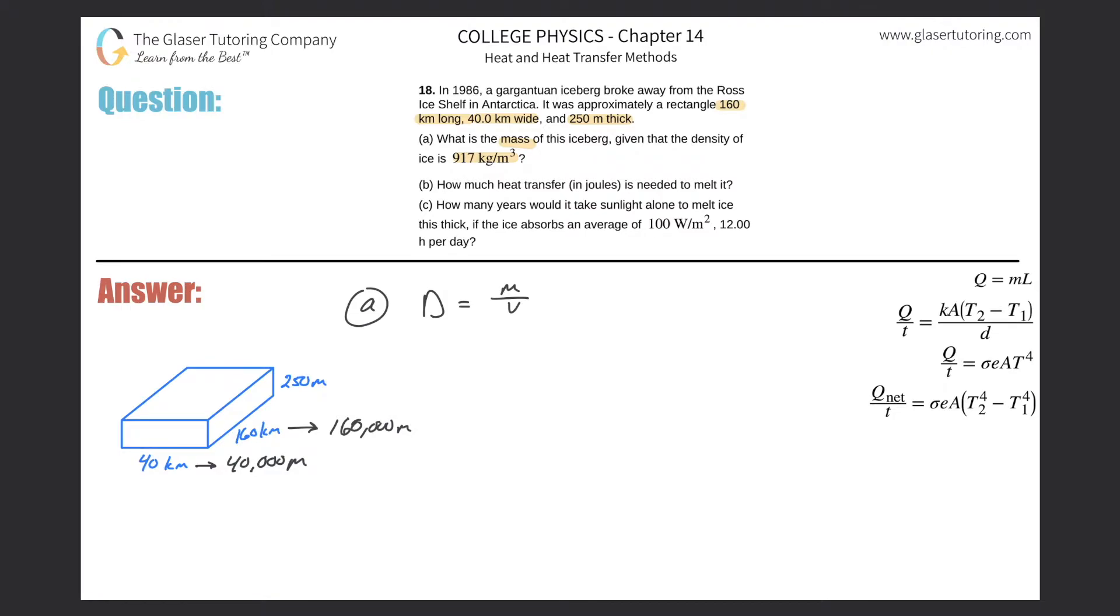Now we can calculate the volume - length times width times height. I know I can solve for the volume, I know they gave me the density, so now I can solve for the mass. Just simply cross multiply. So it's density times volume. The mass now will equal the density of 917 multiplied by the volume, which is length times width times height. So it's 40,000 times 160,000 times 250. Let's see what we get. It's going to be quite a large mass.